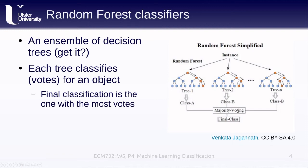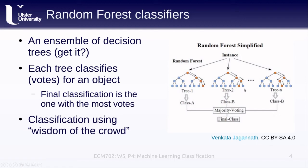You can think of this as a way of using the wisdom of the crowd to help us do our classification. We ask each individual tree to classify a particular object, and we take the majority of the results and use that for our final classification.